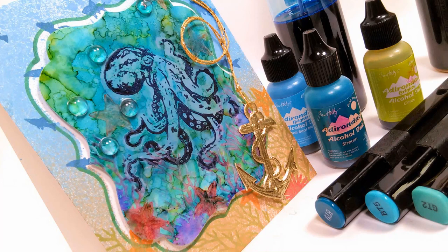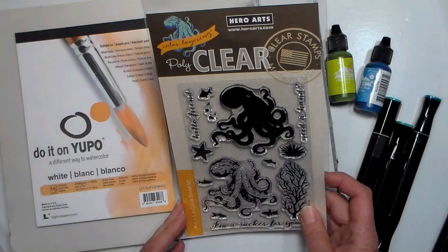Hi there, Lindsay here the Frugal Crafter. Today we're going to use some alcohol ink on Yupo paper and make this cute octopus card.